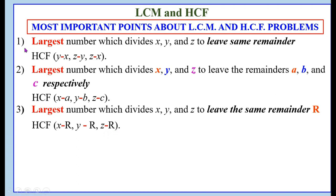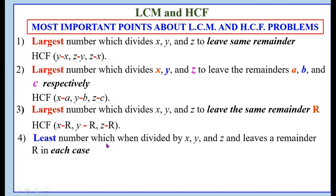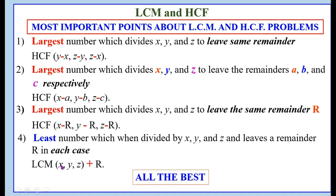The difference between the first and third cases: in the first case we don't know the value of the remainder, so we subtract pairwise differences; in the third case the remainder r is specifically given, so we take x−r, y−r, z−r. Case 4: the least number which when divided by x, y, and z leaves a remainder R in each case — find LCM of x, y, z, then add R. Therefore the answer is LCM(x, y, z) + R.